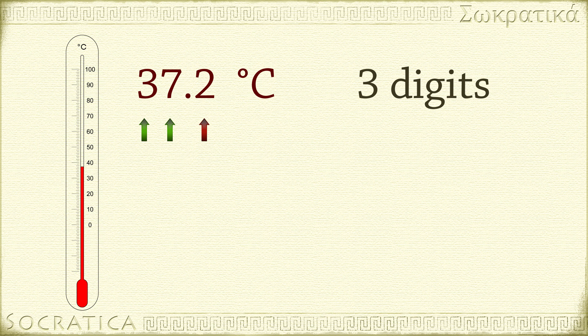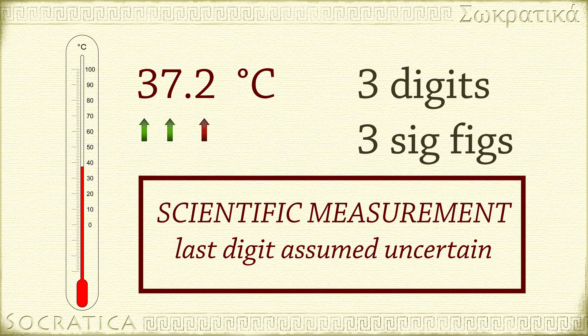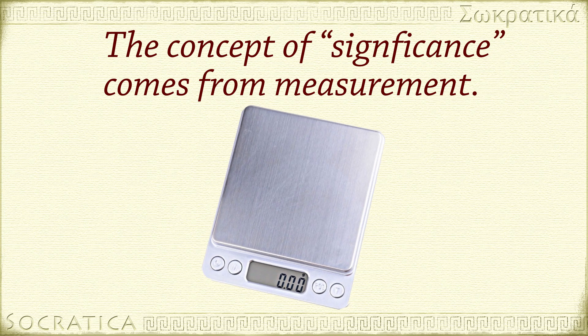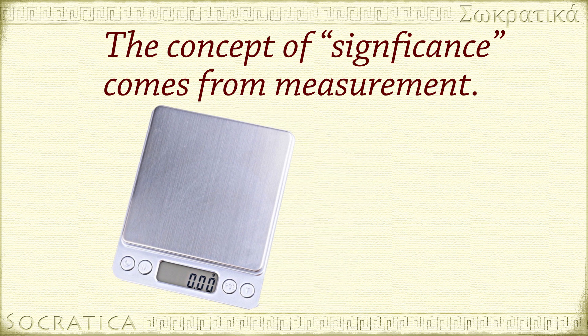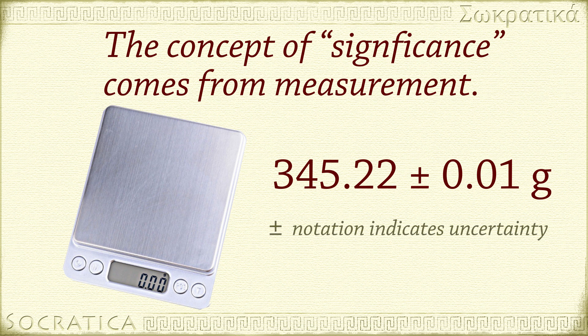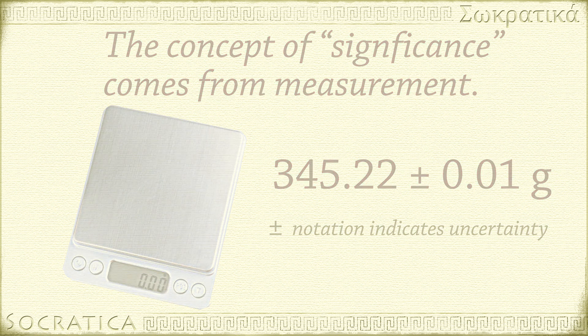But all three digits are considered significant figures. The significant figures in a scientific measurement include all the digits that you know for certain, plus a last digit that is estimated. Similarly, when you weigh a sample on a balance capable of measuring to the nearest 0.01 grams, you can report the mass as 345.22 ± 0.01 grams. The ± notation expresses the uncertainty of the measurement.